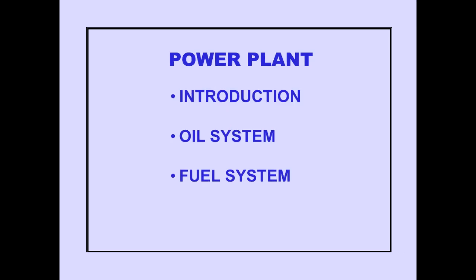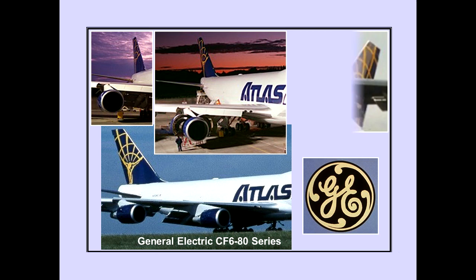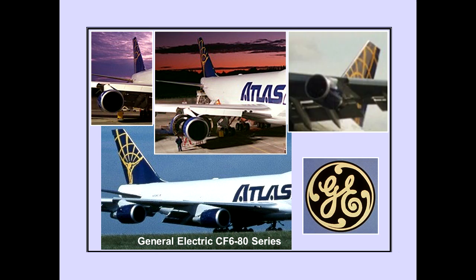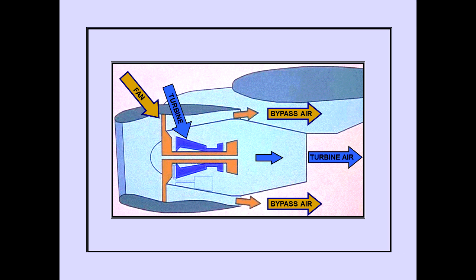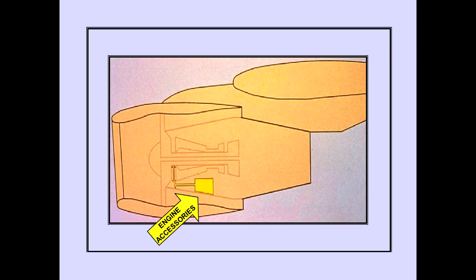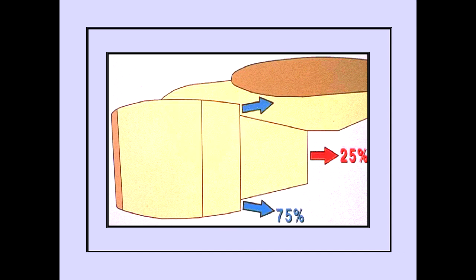This part includes a general power plant introduction and a detailed description of the oil system and fuel system. Four General Electric CF680 C2 Series turbofan engines power the airplane. The engines are high-bypass, two-spool, axial-flow turbofans. Engine accessories are powered by an accessory gearbox driven by the N2 rotor. Each engine can develop 57,900 pounds takeoff thrust. Approximately 75% of this thrust is generated by the bypass fan.